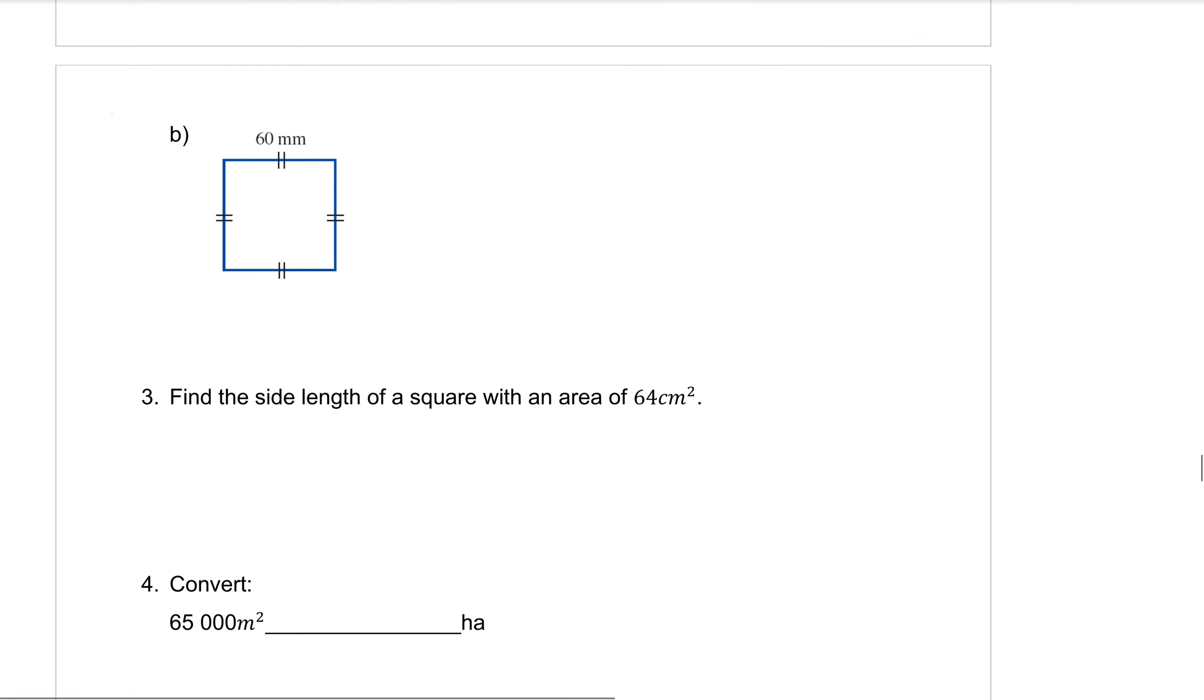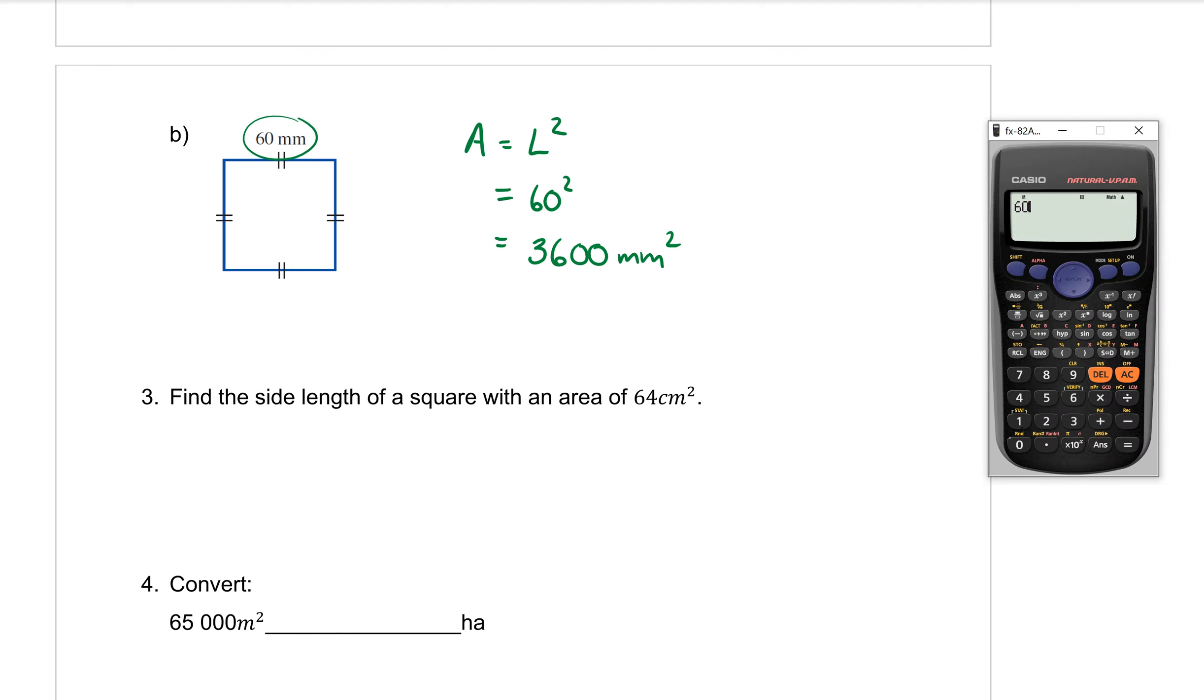On the next page B is a square. So we start by writing the formula A is equal to L squared. L standing for the length of the side which in this case is 60. So all I do is sub that in. That's going to be 60 squared and 60 times 60 is going to be 3600 millimeters squared. Feel free to use your calculators if you need help with that. The squared button I'll show you. So 60 the squared button is here with a little x to the power of 2. You press that and that's how you put the squared into your calculator.